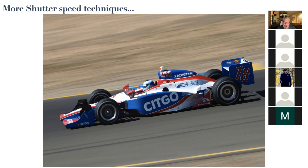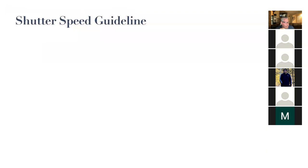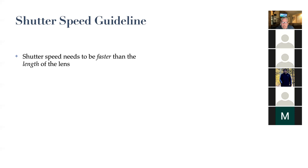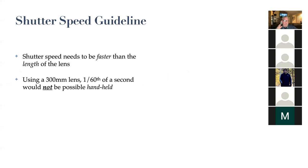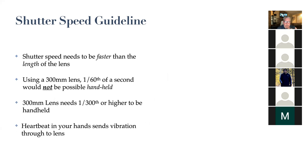A shutter speed guideline - and I promise these next slides are not going to be on any tests. Shutter speed needs to be faster than the focal length of the lens. If you have a really long telephoto lens, a 300mm lens, you couldn't possibly hand-hold it at 1/60th of a second because you have a heartbeat - just the heartbeat in your hand is going to make that image move. So longer lenses need faster shutter speeds.